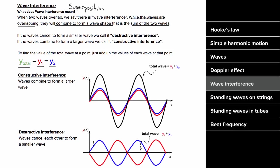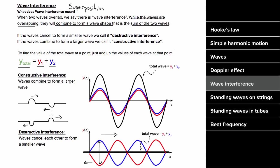If you overlap two waves that are 180 degrees out of phase, they combine to form no wave at all — this is destructive interference. After the waves finish overlapping, they pass right through each other unaffected. If you send two wave pulses down a string that cancel when overlapping, the string would momentarily be flat, but shortly after, the wave pulses continue on their way unchanged.